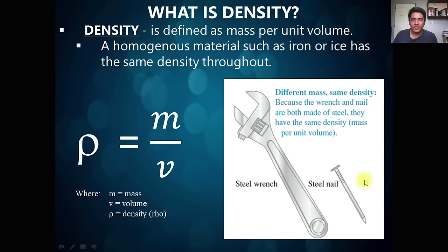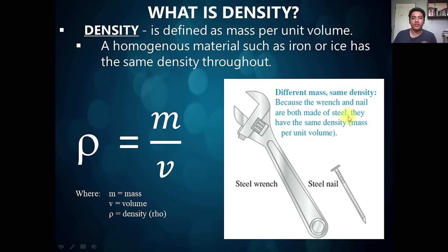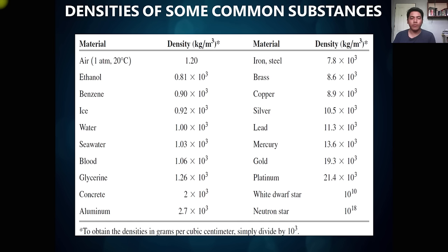A homogeneous material — that is, a material that has the same composition — has the same density. For example, a steel wrench and a steel nail are both steel. Though they have different shape and different mass, their density is the same because they are a homogeneous material. Density is also an important parameter on whether the object would actually sink or float when submerged into a liquid.